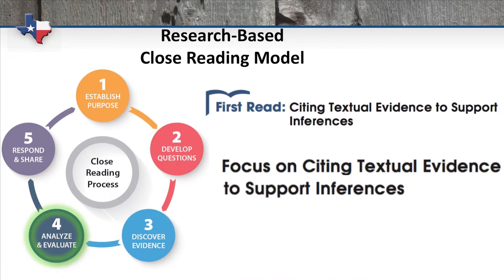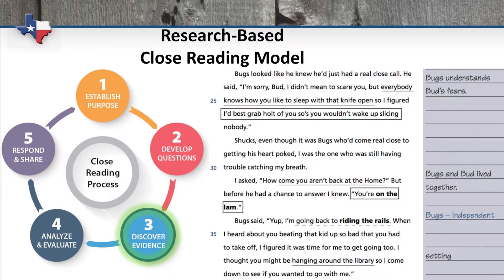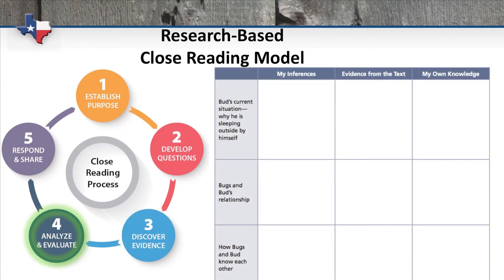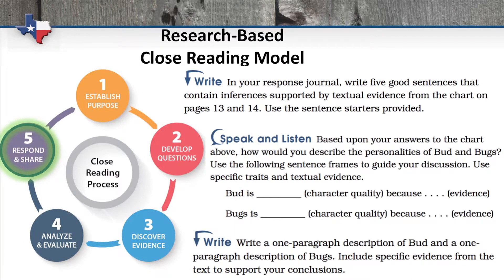We then take our gathered textual evidence and analyze and evaluate it in a focus on skill activity. In this close read, we ask students to take the textual evidence they gathered in the read and make inferences about the setting and the characters' relationships by bringing in experiences and knowledge from their own life. Lastly, the students respond and share by either speaking and listening or writing while citing textual evidence to support their conclusions.